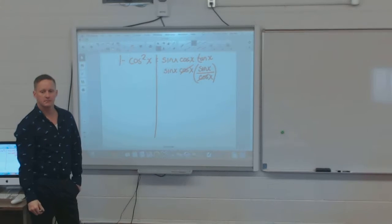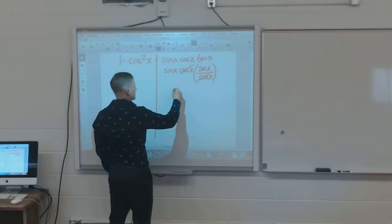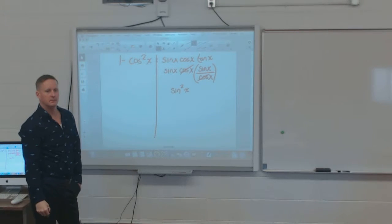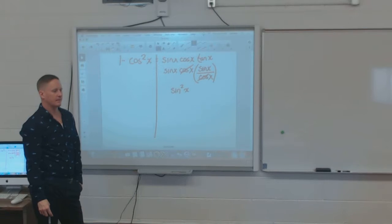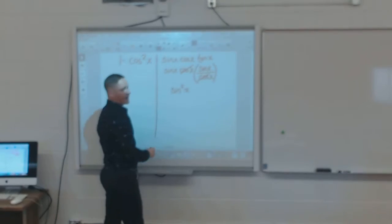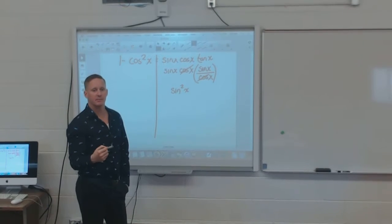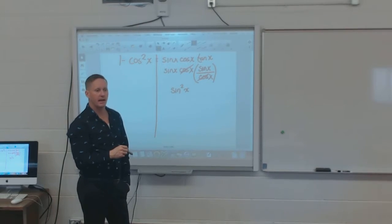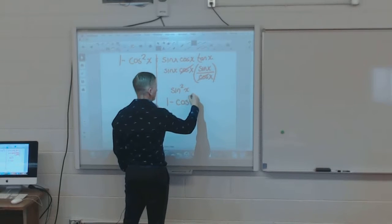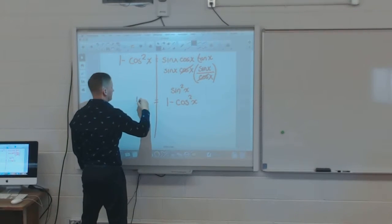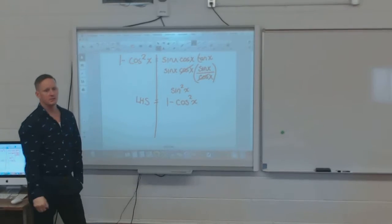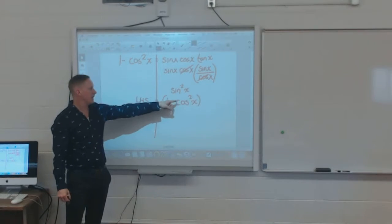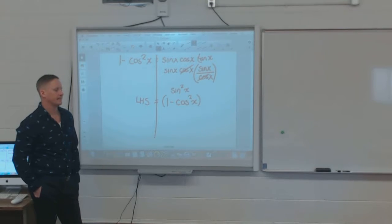What am I left with? Sine squared x. Is that equal to that? Not the way it's written, but is it equal to that? Yes, it is. Sine squared x, if you take Pythagorean's identity, the one that they said you must use, if you take it and you isolate your sine squared x, what are you going to be left with? That's right. It was left-hand side. So, again, I would put that in brackets because I changed it to this, using my identity.